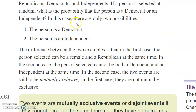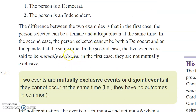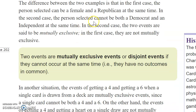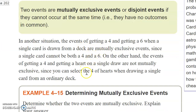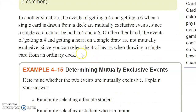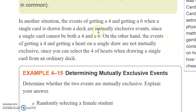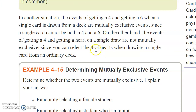When we say it is one or the other — you're either a Democrat or an Independent — we say the events are mutually exclusive. You cannot be both a Democrat and an Independent, so they are disjoint. Two events are mutually exclusive or disjoint if they cannot both occur at the same time — you cannot have outcomes in common. For example, getting a four and getting a six on a card are mutually exclusive, but getting a four and a heart are not, because you can get a four of hearts.